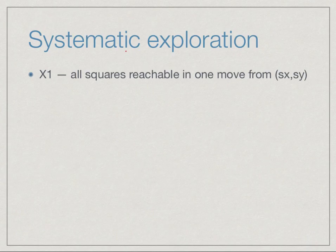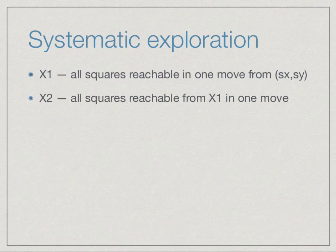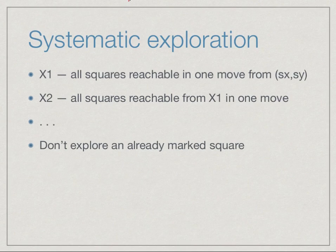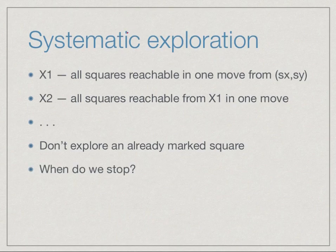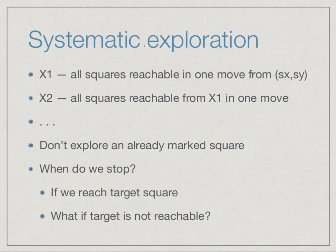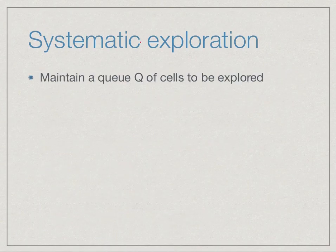What we are trying to do is: first mark all squares reachable in one move from (sx, sy) — call this x1; then mark all squares reachable from x1 — call this x2; then from x2 — x3; and so on. One problem is that squares reachable from x2 will include squares in x1, so how do we avoid re-exploring already marked squares? Also, how do we know when to stop? If we reach the target we stop; but if the target is unreachable we could keep going fruitlessly.